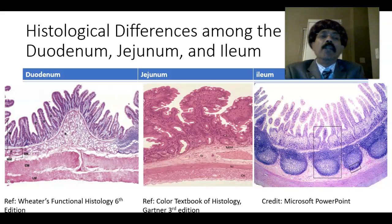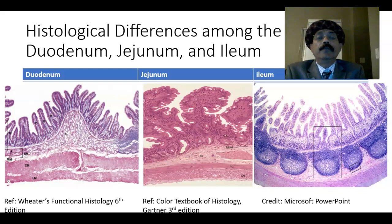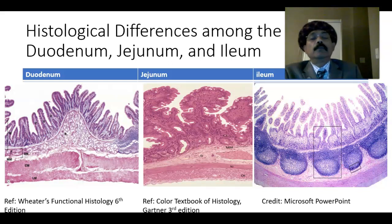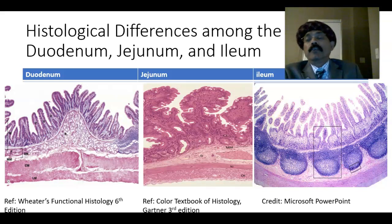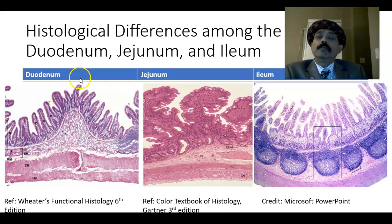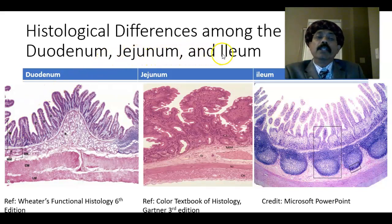Hello, my name is Dr. Diwan S. Raja. Today I will discuss about the histological differences among the duodenum, jejunum, and ileum. Duodenum, jejunum, and ileum together form the small intestine. The first part is the duodenum, the second part is the jejunum, then the ileum.